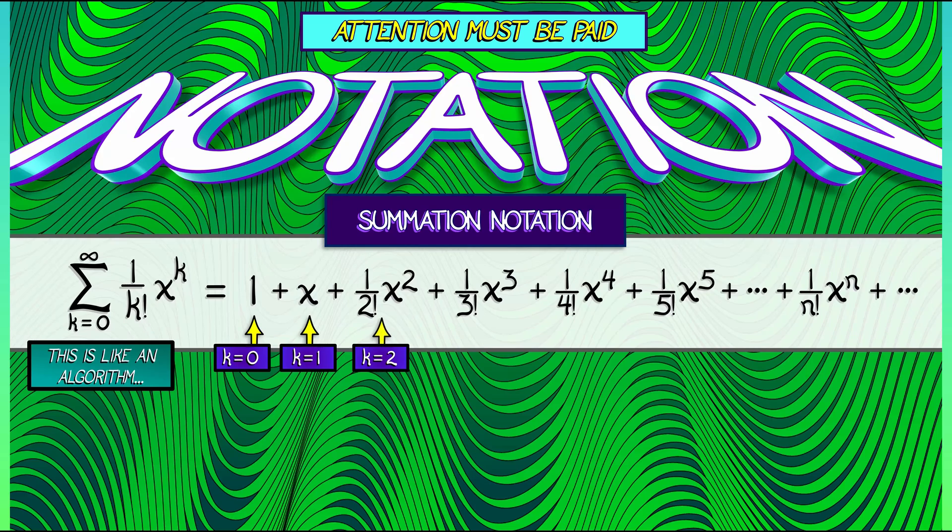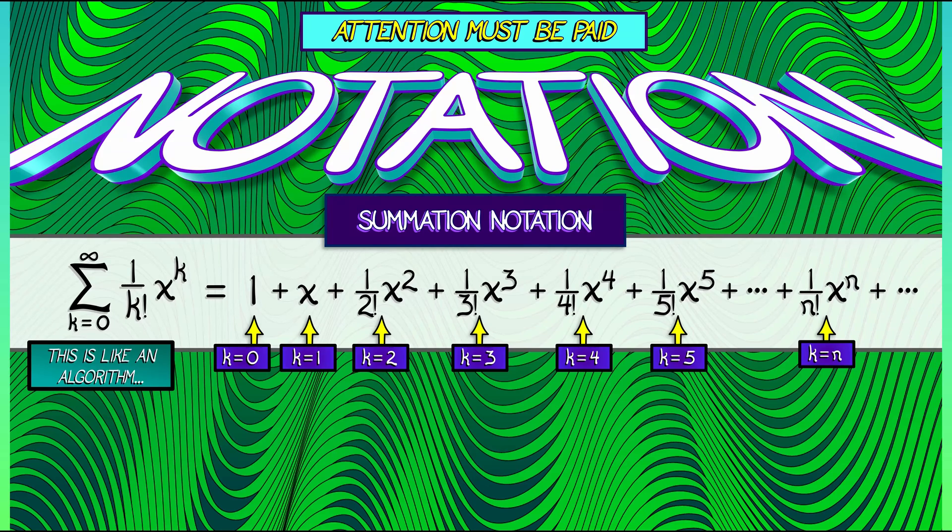The k equals 2 term is 1 over 2 factorial x squared. k equals 3, k equals 4, keep going, writing down all these terms. It is sometimes useful to write out the nth term when k equals n. In this case, 1 over n factorial x to the n.